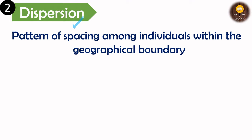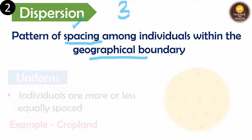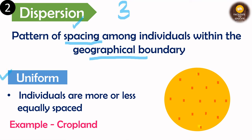The second topic is dispersion. Dispersion is the pattern of spacing among individuals within a geographical boundary. Basically, dispersion is of three types. The first one is uniform distribution or dispersion, in which individuals are more or less equally spaced from one another. This doesn't happen normally in ecosystems, but in the example of croplands where we are growing artificially, it is a kind of uniform dispersion.